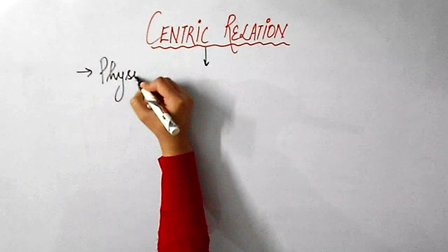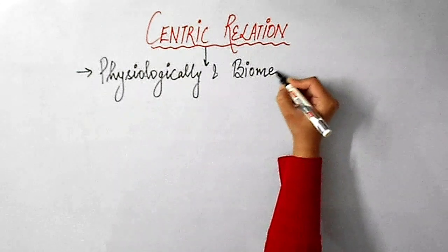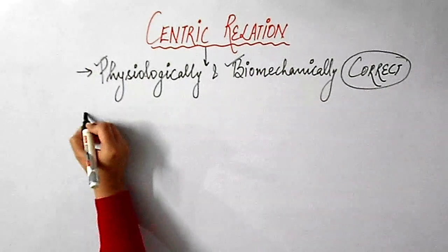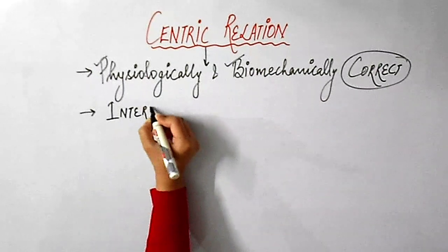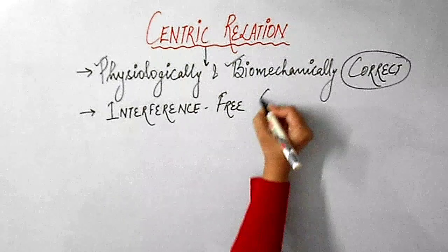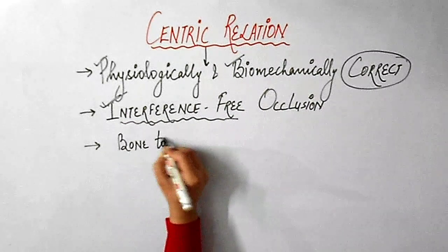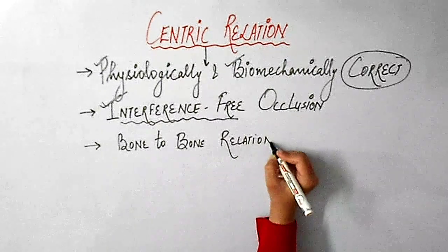So basically, centric relation is a jaw position which is physiologically and biomechanically correct, and it is the only jaw position that permits an interference-free occlusion. In short, I can say that centric relation is a bone-to-bone relationship.